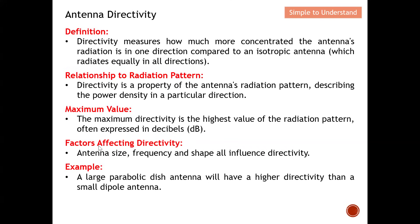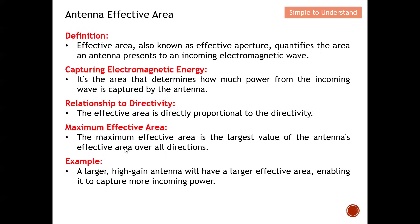Factors that affect directivity include the antenna size, which changes the effective wavelength, as well as the frequency and the shape of the antenna. As a simple example, a large parabolic dish antenna will have a higher directivity compared to a small dipole antenna.